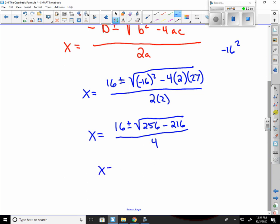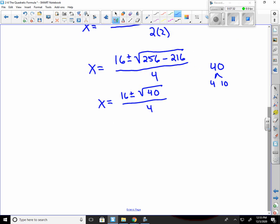Gives you x equals 16 plus or minus square root of 40 over 4. Now we're going to figure out what goes into 40, so we're going to simplify this root. 40 is 4 times 10. The 4 is a perfect square, so a 2 comes out in front, and the 10 stays inside.